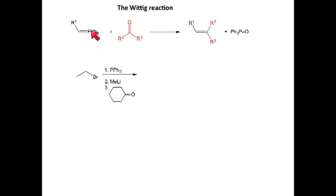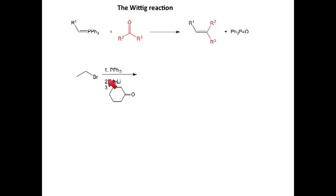Essentially, the carbon connected to the phosphorus now forms a double bond to the carbon that was attached to the carbonyl, generating our alkene. This is the main organic compound we're interested in forming. In our first example, steps one and two are going to make our phosphonium ylid, which will have a structure similar to this. Then in step three, we add in our electrophile — in this case, a ketone. We'll go through the mechanism and predict the actual product.